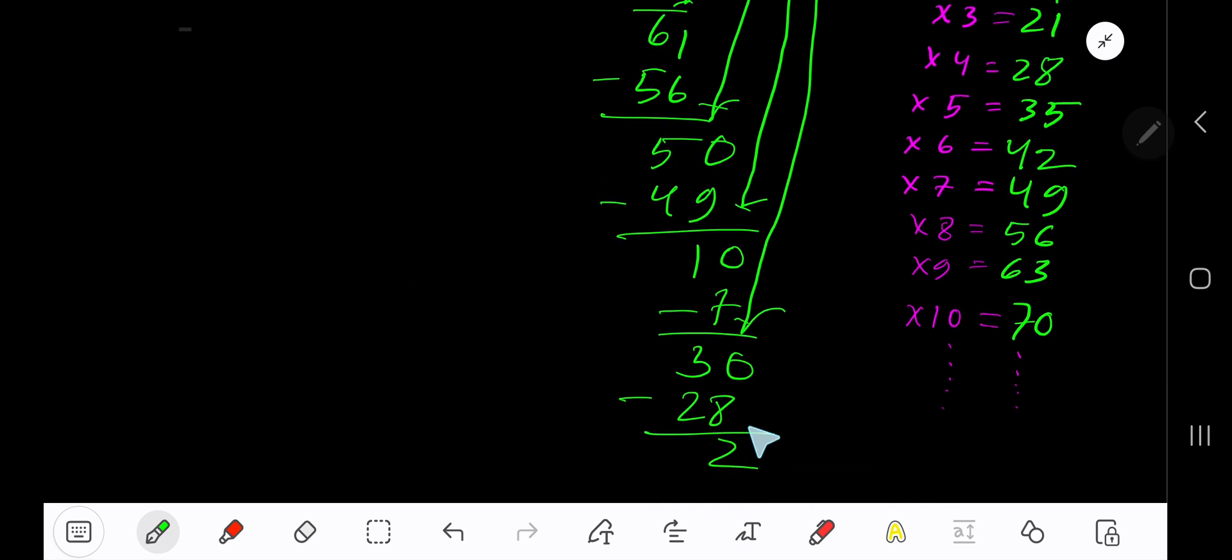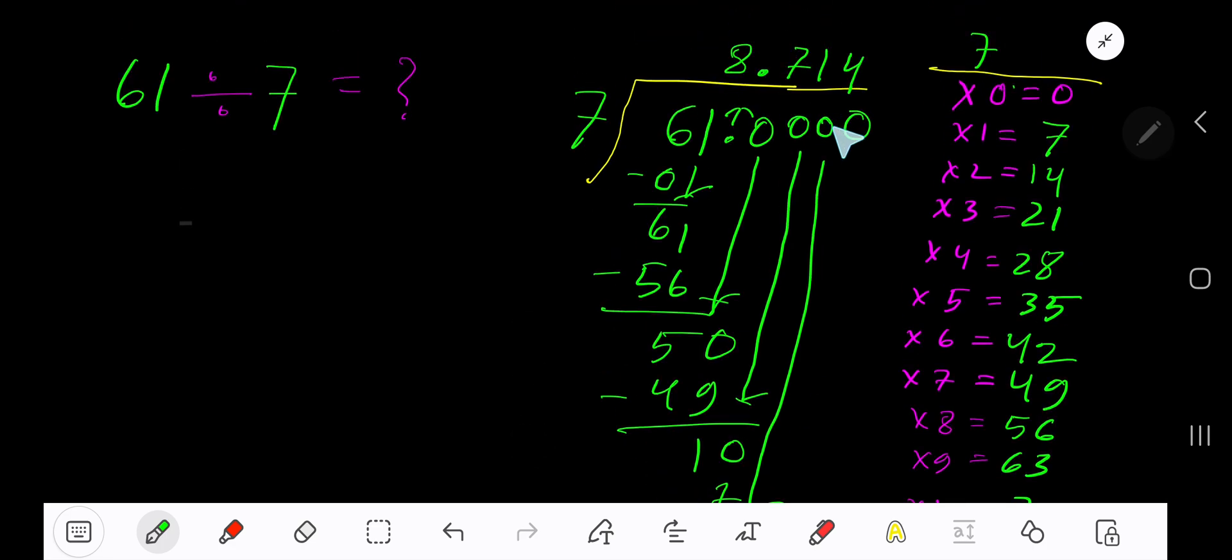You can bring down more zeros, but since I have gotten 3 places of decimal, I'll stop here. 8.714 dot dot dot is the answer.